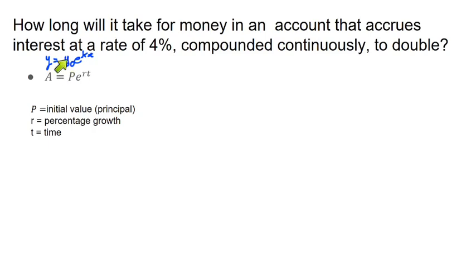So instead of y₀ for initial value, we're using P for principal. Instead of k for our constant of growth, we're using r. But either way, that's going to be our r, that's our percentage growth, that's our rate, and then t is still time. So I just want you to recognize that this is not a new formula. It's our same one, just with some different variables.